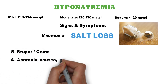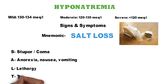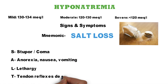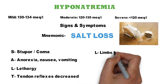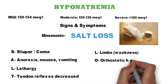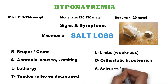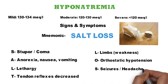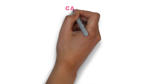A is for anorexia, nausea, and vomiting. L is for lethargy. T is for decreased tendon reflexes. L is for weakness of limb muscles. O is for orthostatic hypotension. S is for seizures or headache. And the other S is for stomach cramps.